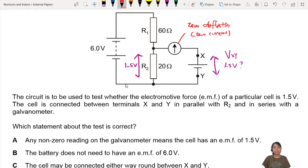If zero deflection, oh yes, that means VXY is 1.5 volts. It's designed to be that way. This is what potentiometer circuits do. Zero deflection means that V2, which is from R2 here, equals VXY - balance, both sides are balanced. Which statement about the test is correct?